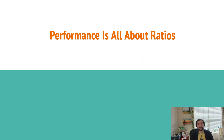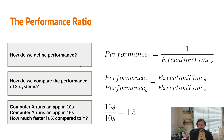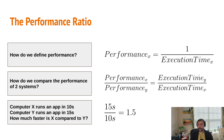Now that we know a bit more about performance, performance is really all about ratios — the ratios of performance between different architectures and different systems running different tasks. We typically define the performance of some architecture X running some application as equal to one over the execution time. This makes it nice to compare the performance of two different systems. If we want to compare performance X versus performance Y — how much faster X is than Y — we can just take the execution time of Y over the execution time of X.